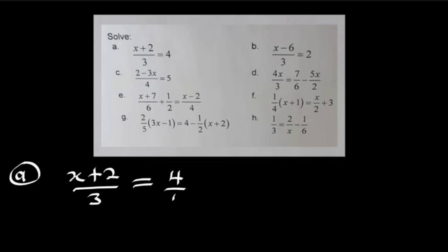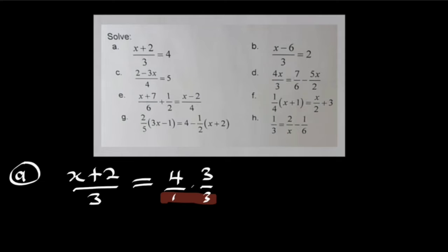So from the left-hand side, we have our denominator to be 3, and to the right-hand side, we have our denominator to be 1. But we want to ensure that they are all the same, and we do that by multiplying the right-hand side by 3 divided by 3. Since 3 divided by 3 equals 1, this is just like multiplying 4 by 1. So now if we multiply 1 by 3 it gives us 3, making the denominators equal. Therefore, x plus 2 must equal 4 multiplied by 3, which equals 12.